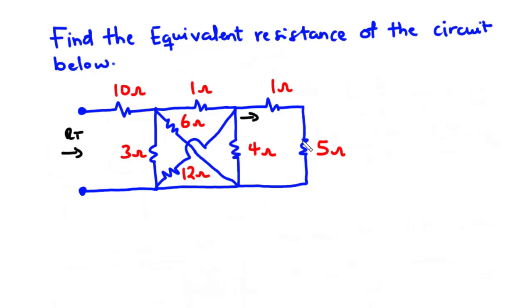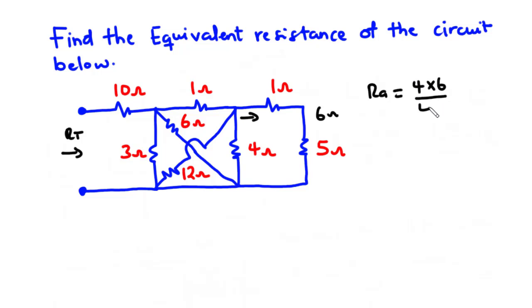That 6-ohm combined resistor is in parallel with the 4-ohm resistor, because going through the loop you pass through only those two resistors without passing through any other circuit element. Let Re be their combination: 4 times 6 divided by 4 plus 6 equals 24 over 10, so Re equals 2.4 ohms.